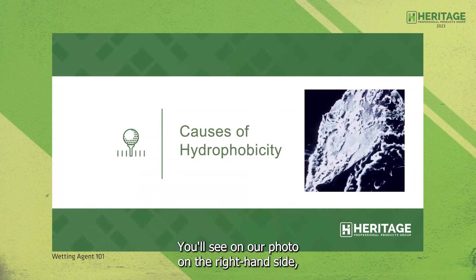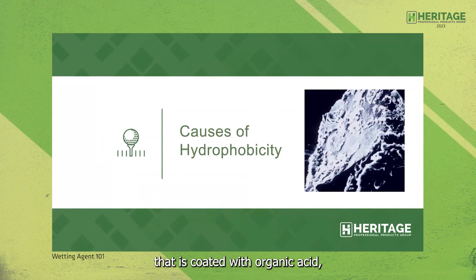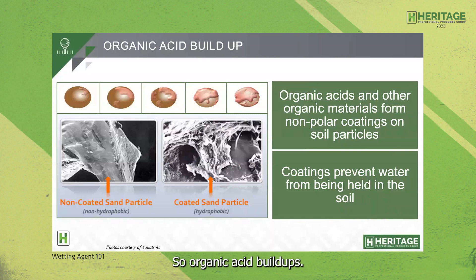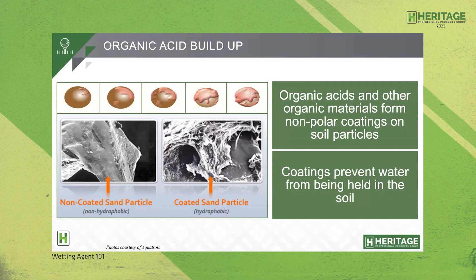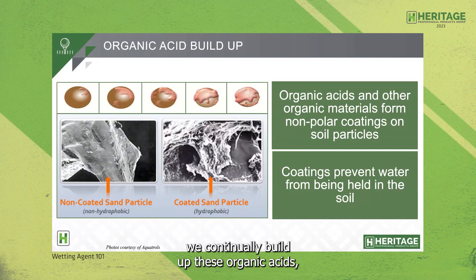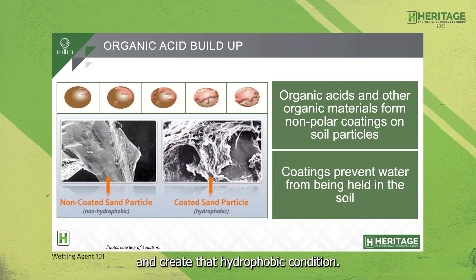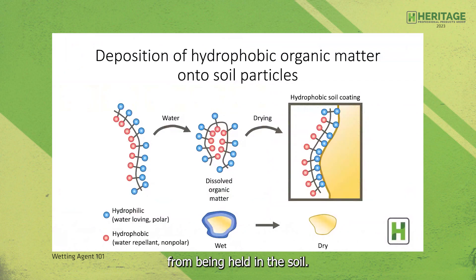Looking at causes of hydrophobicity: you can see a soil particle taken with an electron microscope that is coated with organic acids, creating a hydrophobic condition. Because of decomposition of plant material and the compounds given off by the microbial population, organic acids start to form on the soil particle almost immediately after establishment of plants or turf grass. Slowly over time, we continually build up these organic acids, creating a non-polar coating on the soil particle and causing it to be hydrophobic. The picture of the non-coated, non-hydrophobic sand particle shows what we start with, and over time we build up those coatings that prevent water from being held in the soil.